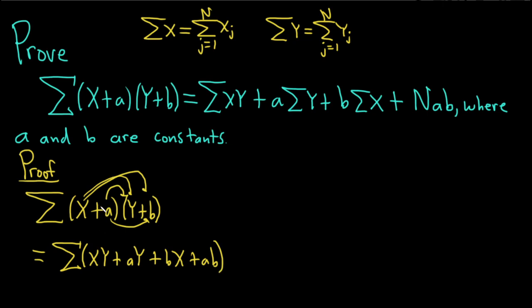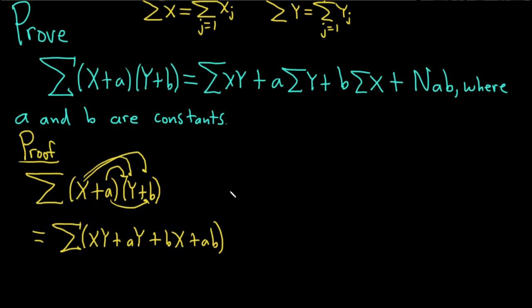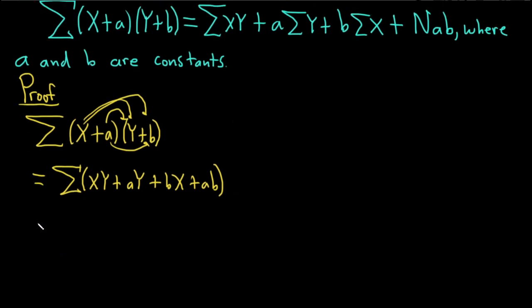I multiplied it out in this order. I did x times y, a times y, because I saw the y first. And then we did x times b, and then a times b, and we got this. So now we can break this up into four individual sums.